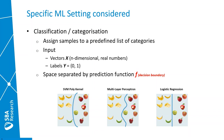We are basically learning a prediction function f that is separating our input space, forming a decision boundary. There are many different learning paradigms, for example support vector machines with different types of kernels, multi-layer perceptrons also known as neural networks, and logistic regression.